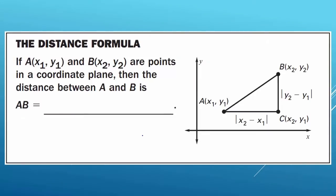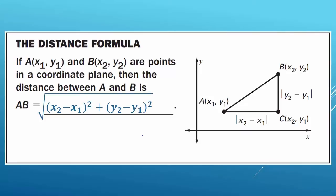The distance formula is really important. You will be using this formula a lot throughout geometry, so make sure you know how to use it and remember it. If A has coordinates (x1, y1) and B has coordinates (x2, y2) on a coordinate plane, then the distance between A and B is given by the formula: the square root of the quantity (x2 minus x1) squared plus (y2 minus y1) squared.